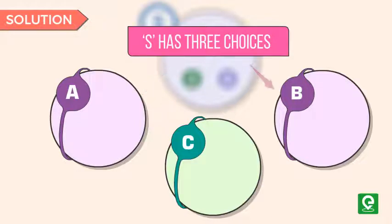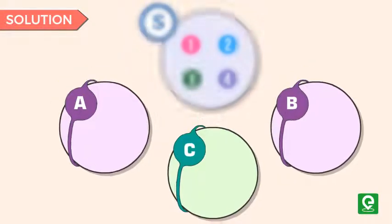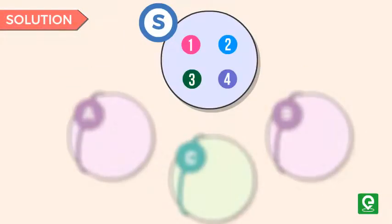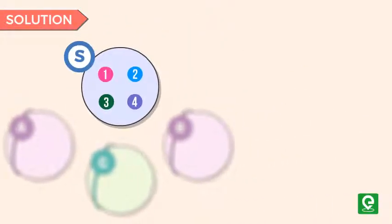Each element has three choices: set A or set B or set C. Since each element has three options and set S has a total of 4 elements present, the total number of possible pairs is 3 raised to the power 4, that is 81.